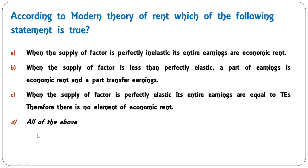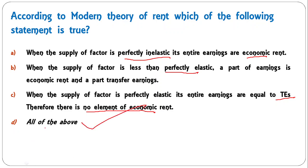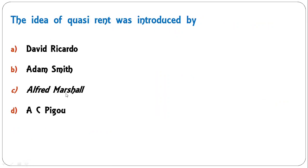According to the modern theory of rent, which statements are true regarding elasticity? When supply of a factor is perfectly inelastic, its entire earning is economic rent. When supply is less than perfectly elastic, a part is economic rent and a part is transfer earnings. When supply is perfectly elastic, entire earnings equal transfer earnings and there is no element of economic rent. All three statements are correct, so D — all of the above — is the answer.